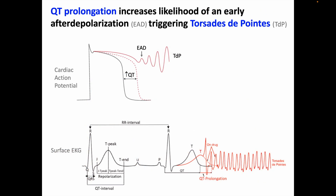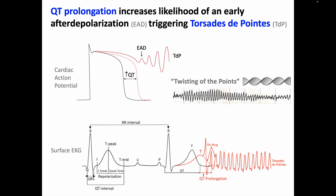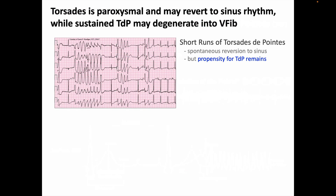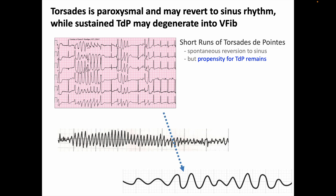Class III antiarrhythmics, and many other drugs, can delay cardiac repolarization, prolonging the QT interval. When the QT interval is prolonged, there is increased likelihood of a cell developing an early-after depolarization that might trigger torsade. Torsade de pointes is French for twisting of the points, describing the EKG pattern of polymorphic ventricular tachycardia where the depolarization vector keeps changing, making the tracing look like a twisted party streamer ribbon. Torsade is paroxysmal and can occur in short runs reverting to sinus rhythm, but the prolonged QT persists and torsade may recur or degenerate into ventricular fibrillation.